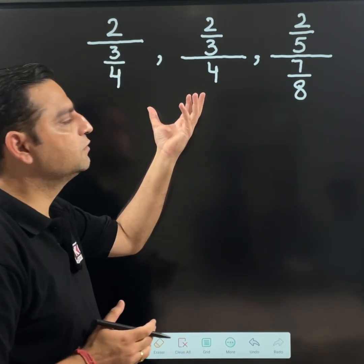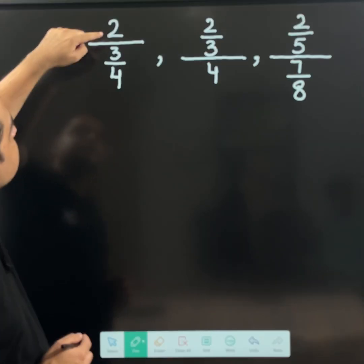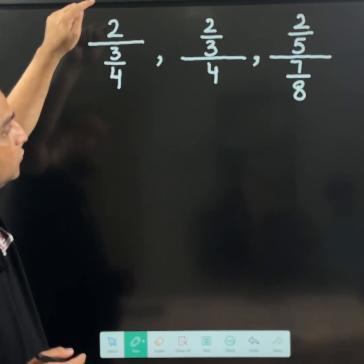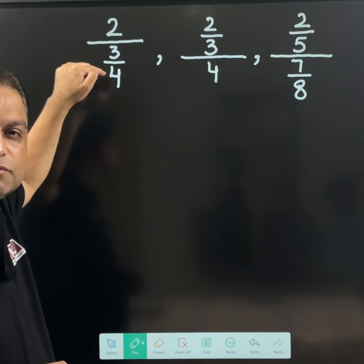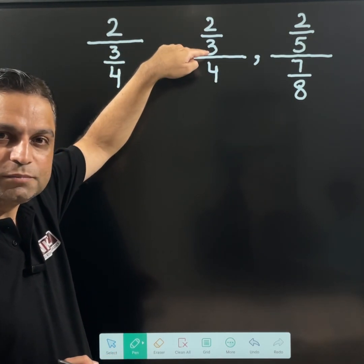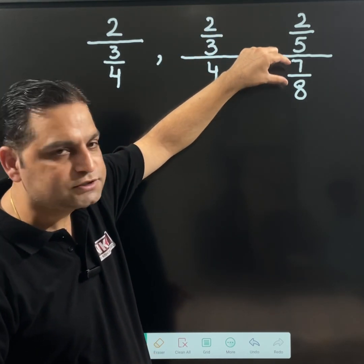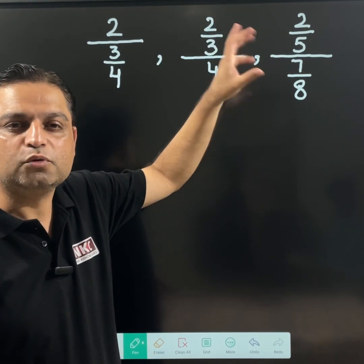Please check the situation in these type of division of fractions cases. Like the first case numerator is 2, denominator is 3 upon 4, or second case numerator is 2 upon 3, denominator is 4, or there are fractions in numerator and denominator both.